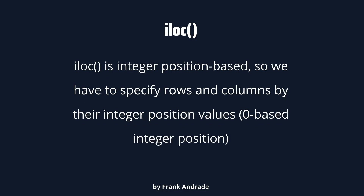Now let's look at the iloc method. This method is integer position-based, so we have to specify rows and columns by their integer position values. This is a zero-based integer position, which means it always starts with zero. The main difference between loc and iloc is that with loc we only need the column and index labels, but with iloc we need to specify the integer position values — we have to find which position the row and column are in.